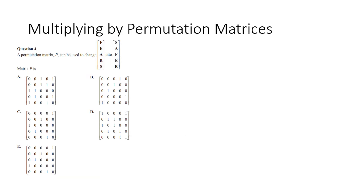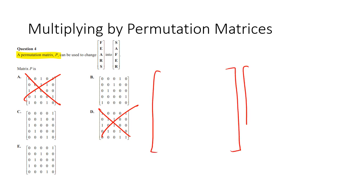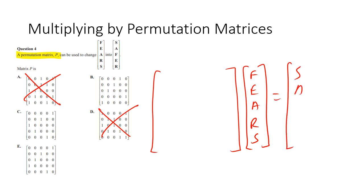This is from the 2017 Exam 1 and they want us to find a permutation matrix such that FEARS is turned into SAFER. A and D are not permutation matrices because they have more than one 1 in each row or column. We know it's going to be a 5×5 and we're multiplying FEARS to get SAFER. A permutation matrix just rearranges the letters — it doesn't change what the letters are.